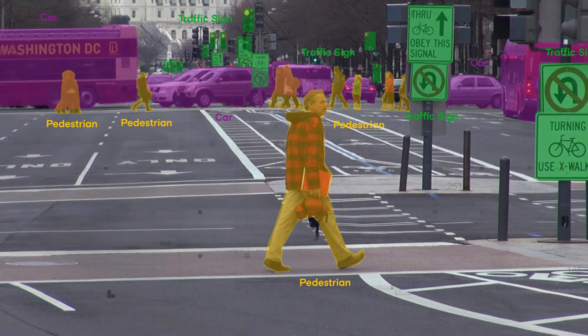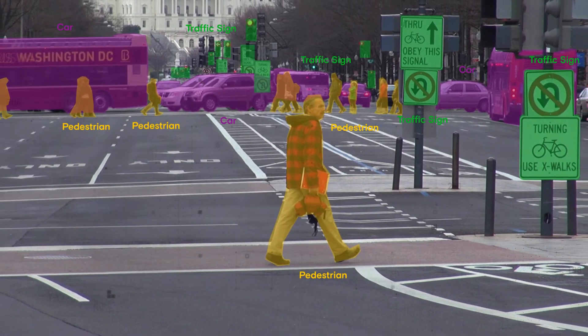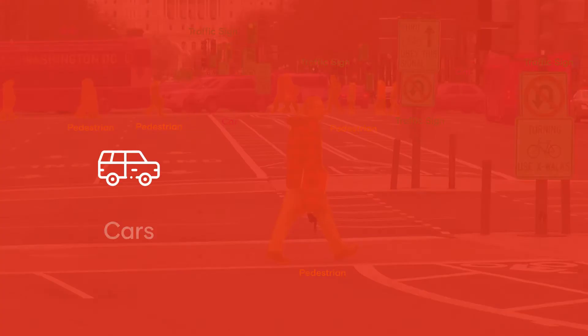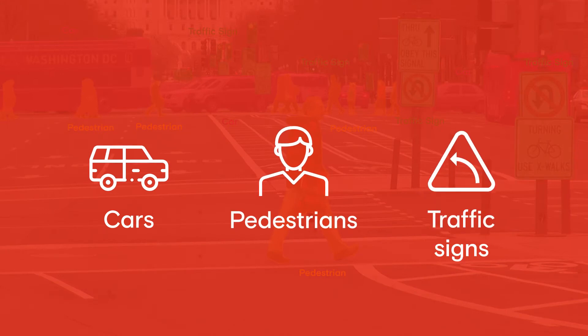Autonomous vehicles rely on sensor and camera captured video data that's then labeled with cars, pedestrians, traffic signs, and other objects to train the car where it needs to go, how to react to its environment, and what to avoid.